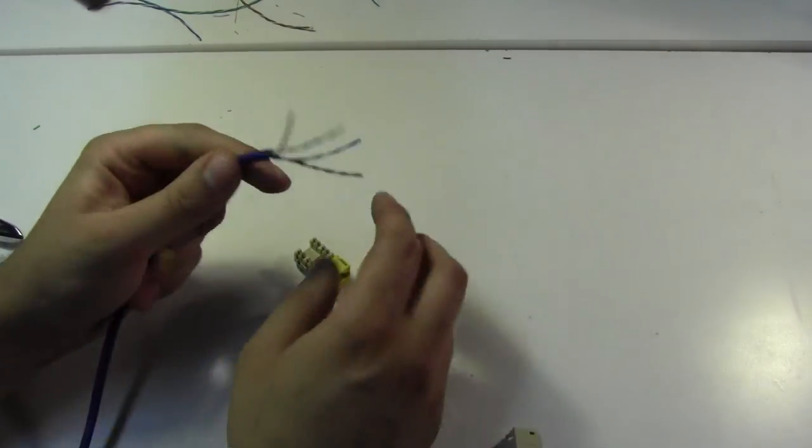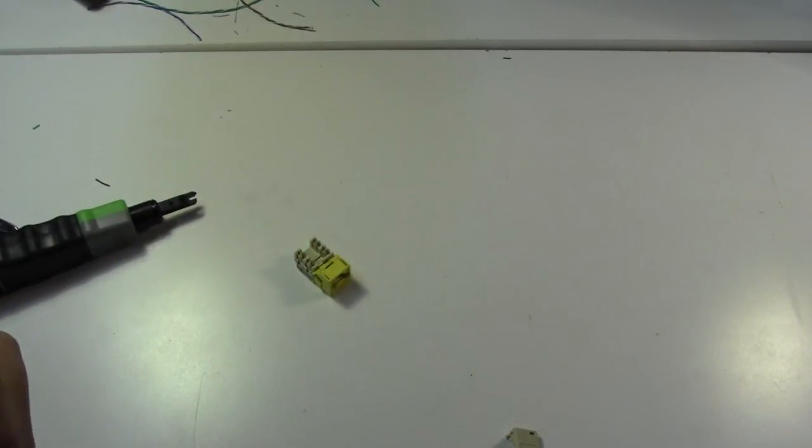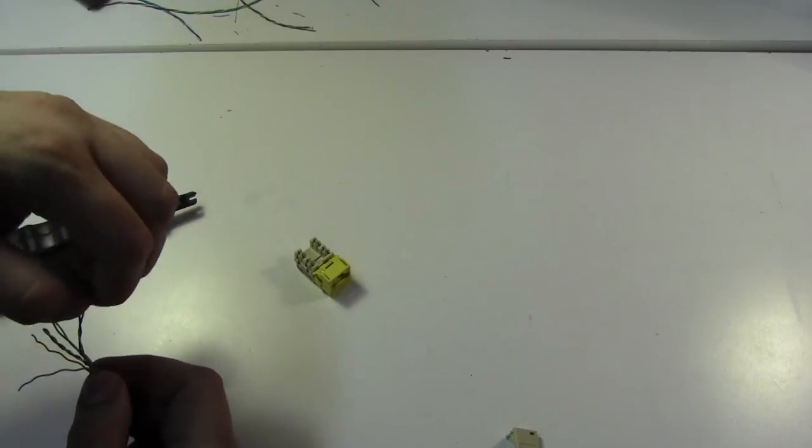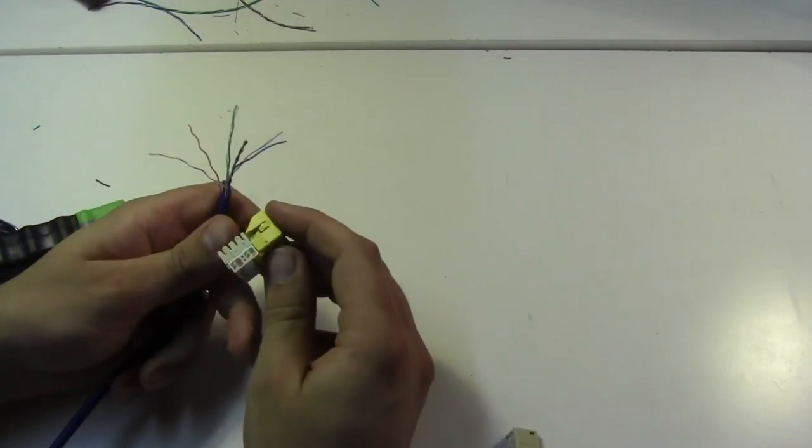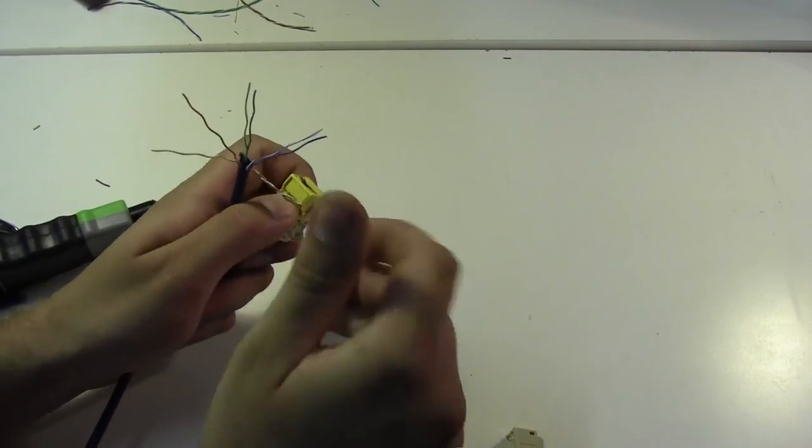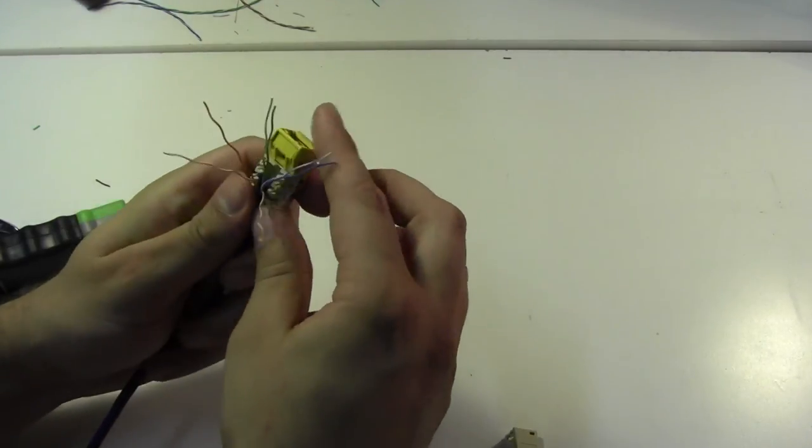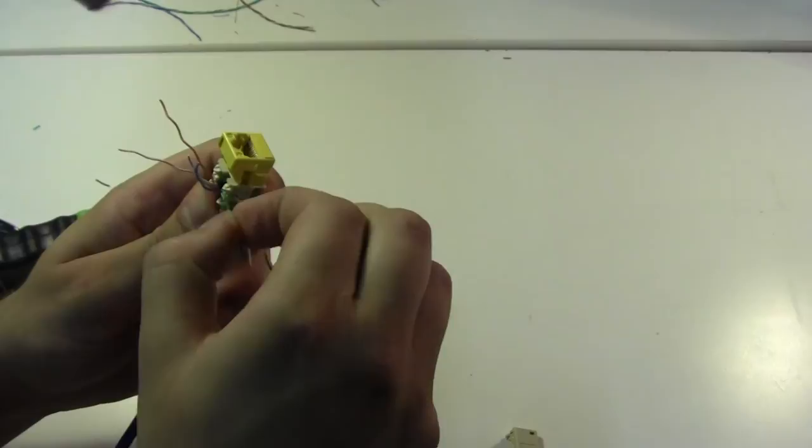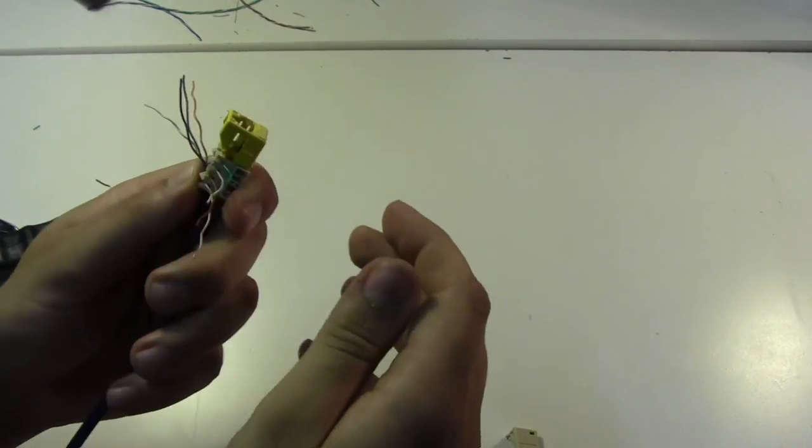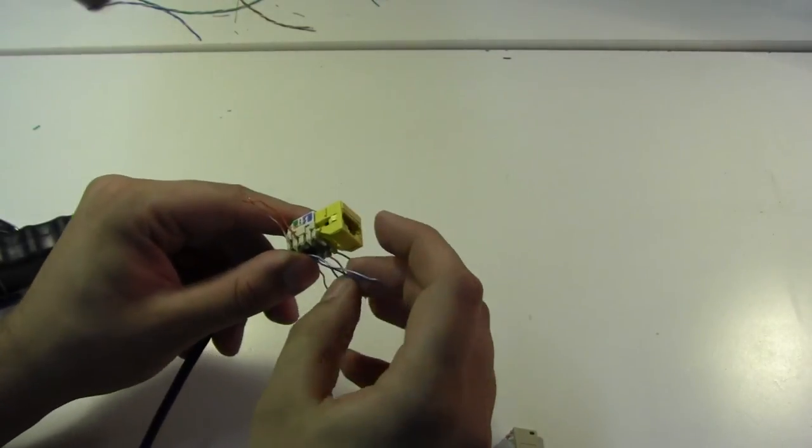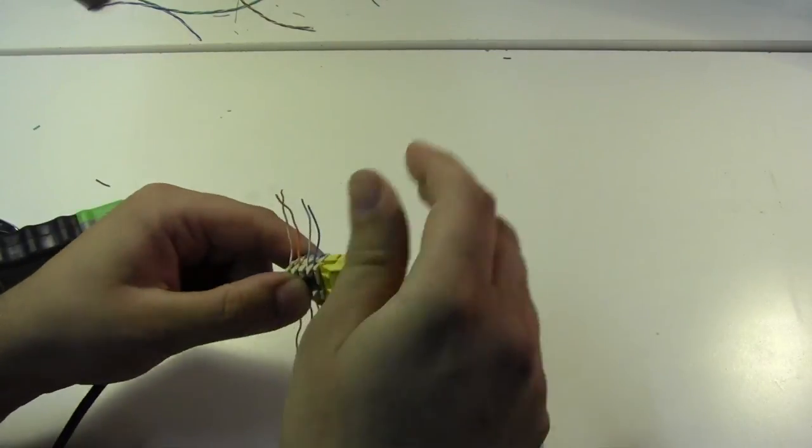So, having stripped our cable here, we can unravel it. So I will untwist all these pairs for you. And so, looking at the keystone, it's got the color-coded green, brown, orange, blue. And so we take our brown pair and we lay it down there. Take our green pair and lay it down there. Orange pair and our blue pair. So lay them out like that.